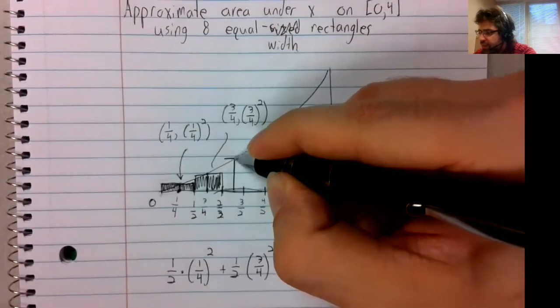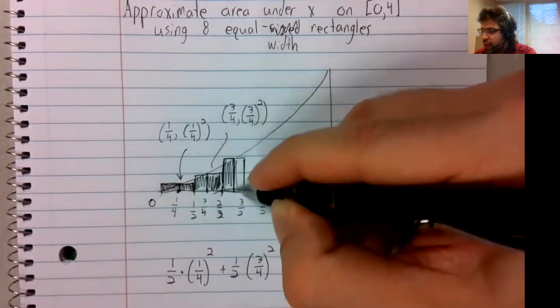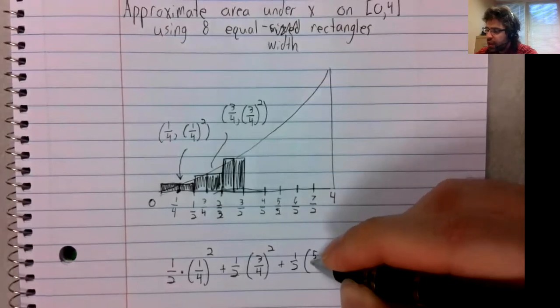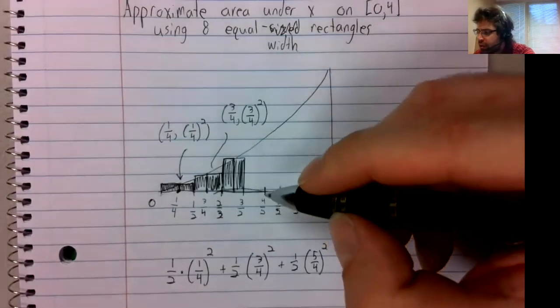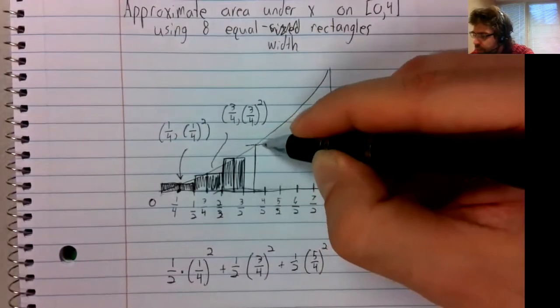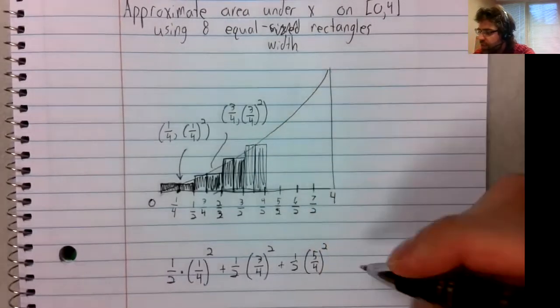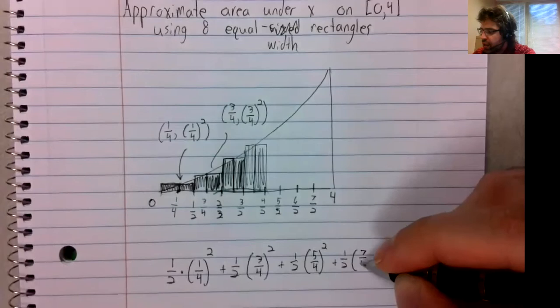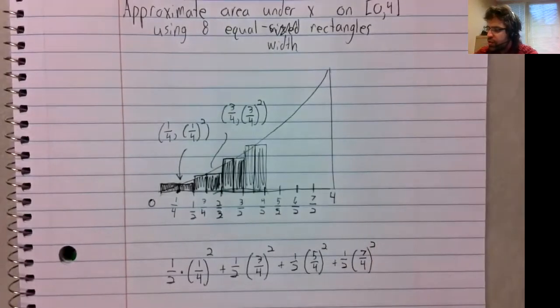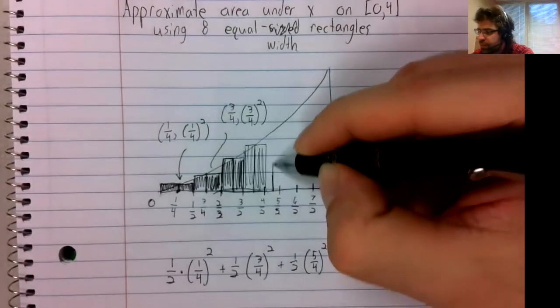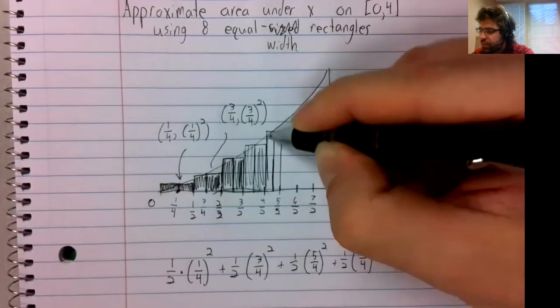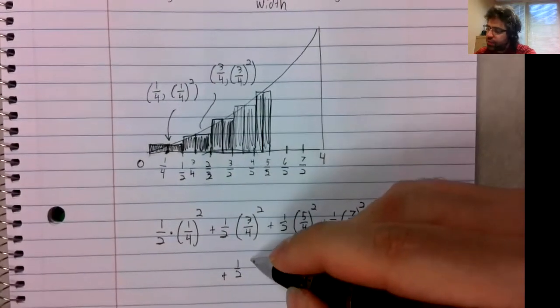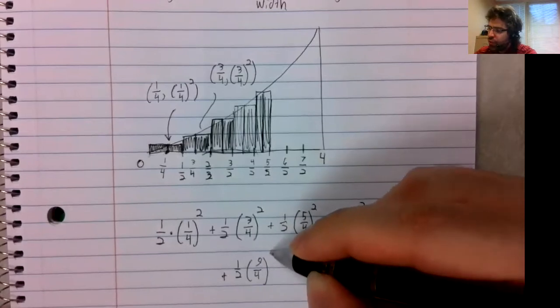And we keep going. One half times five fourths squared, plus one half times seven fourths squared, plus one half times nine fourths squared.